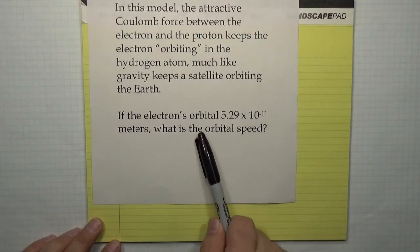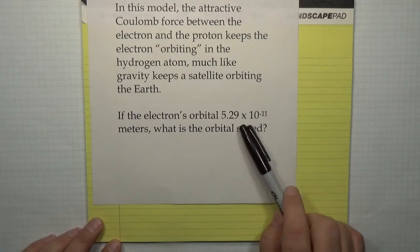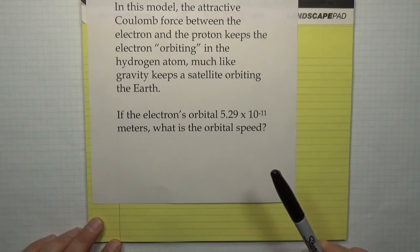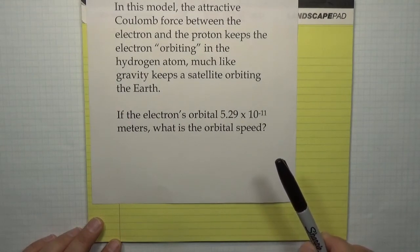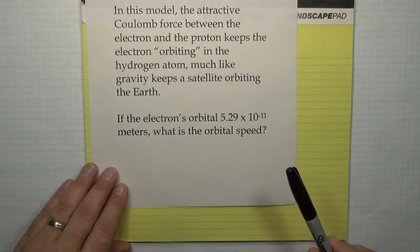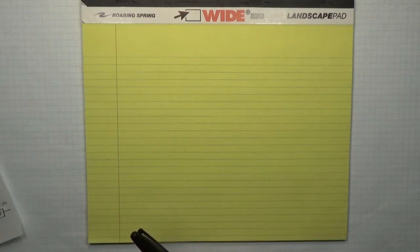So if the electron's orbital distance is 5.29 times 10 to the minus 11 meters, what we'd like to know is what is the orbital speed that it has as it goes flying around the proton in the atom. That's a straightforward calculation — it requires you to use knowledge from last term as well as knowledge from this term.